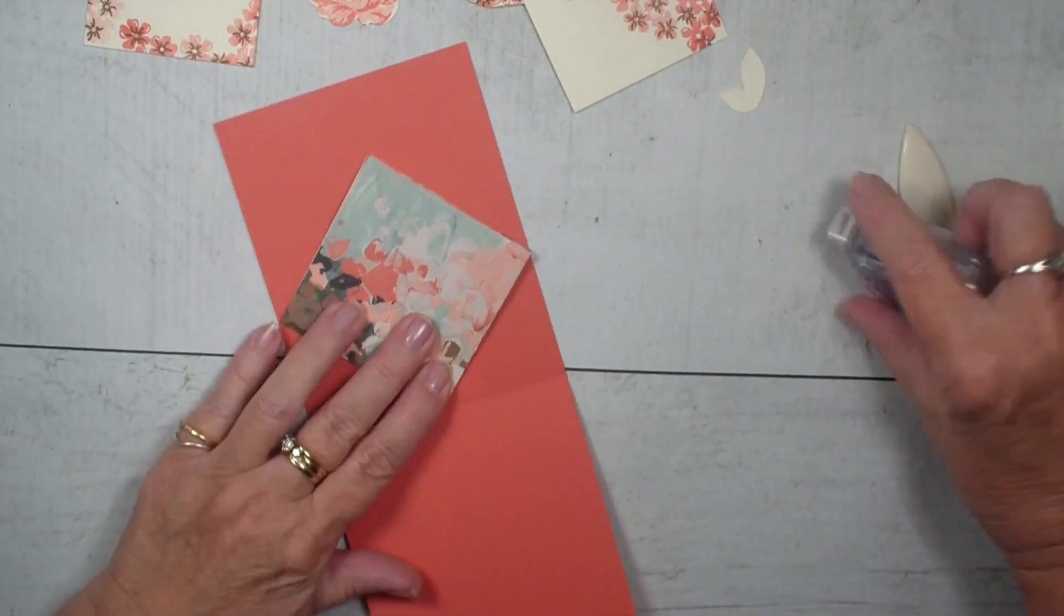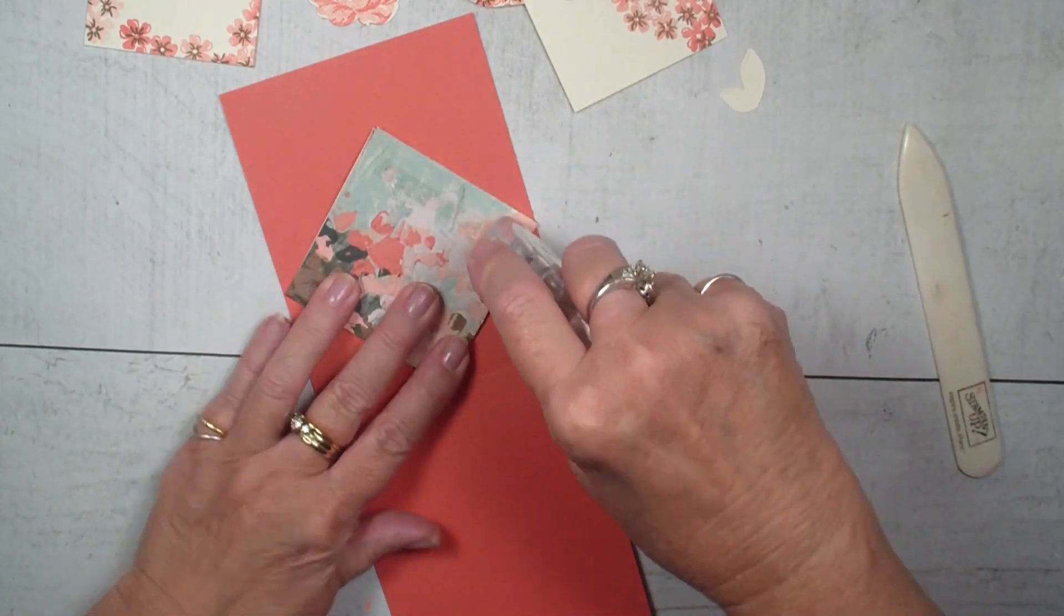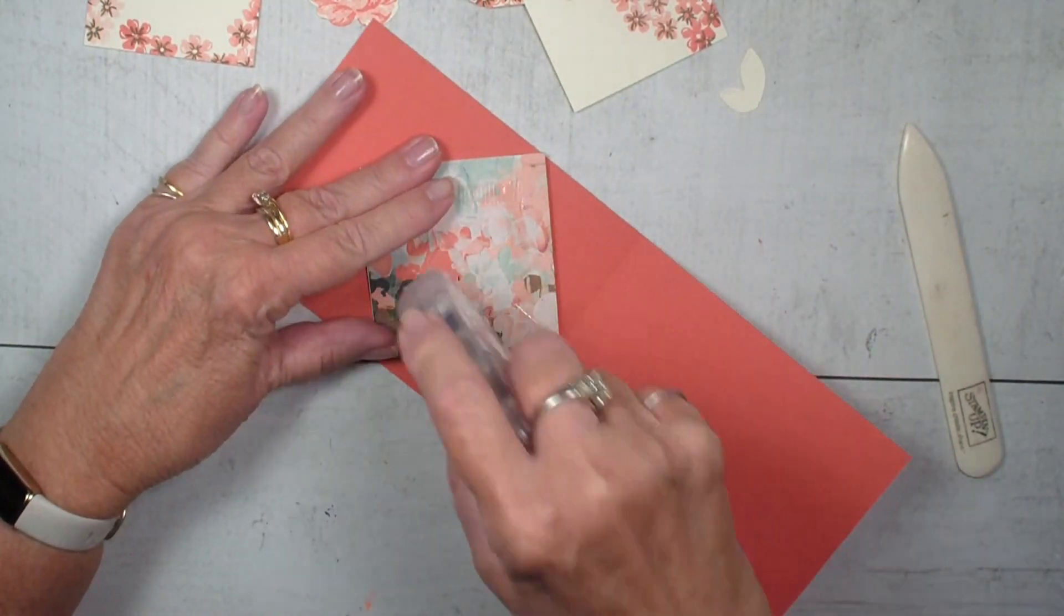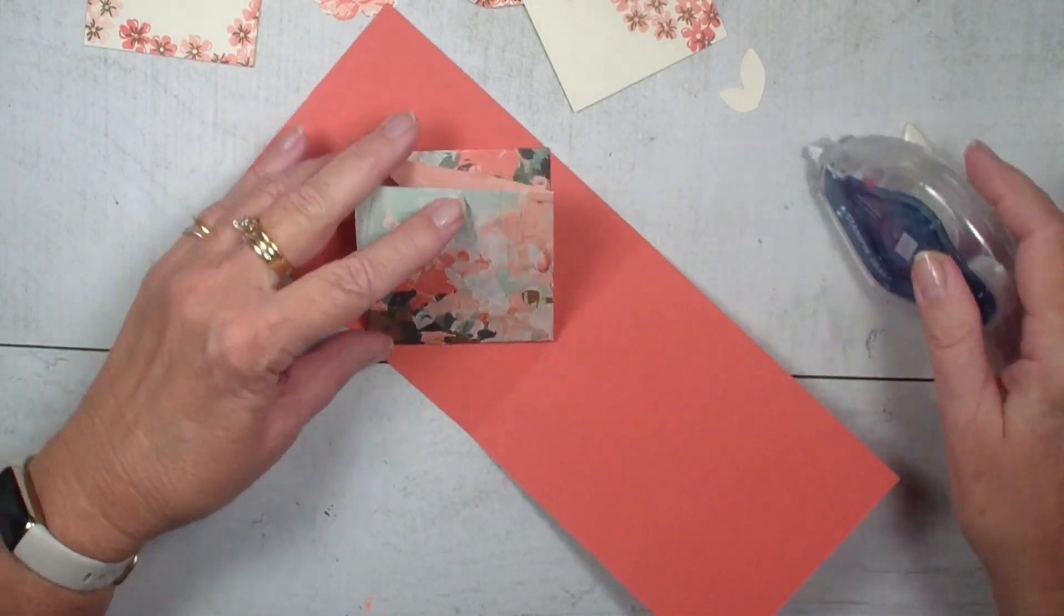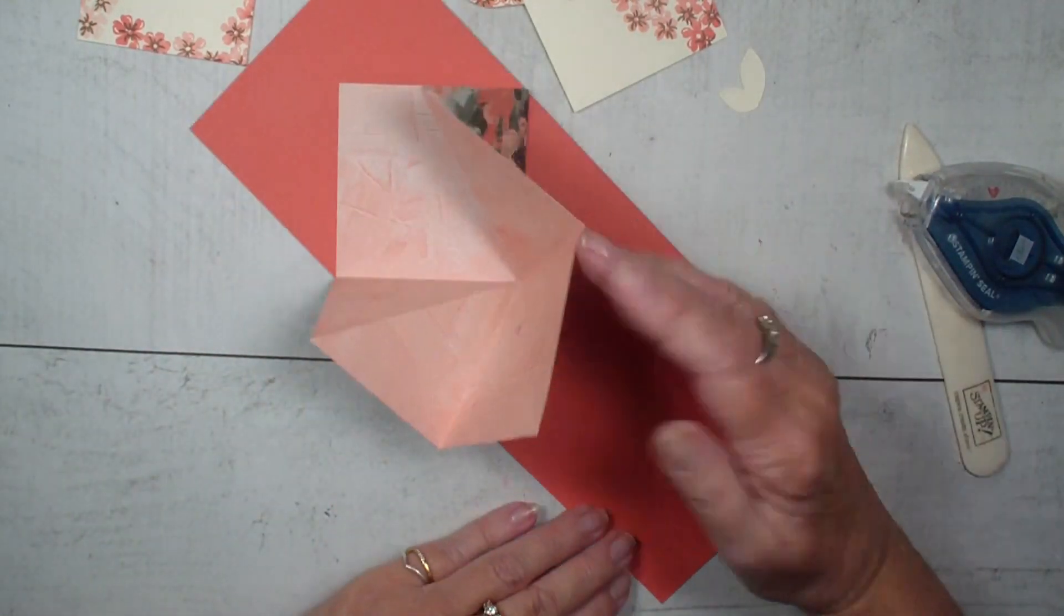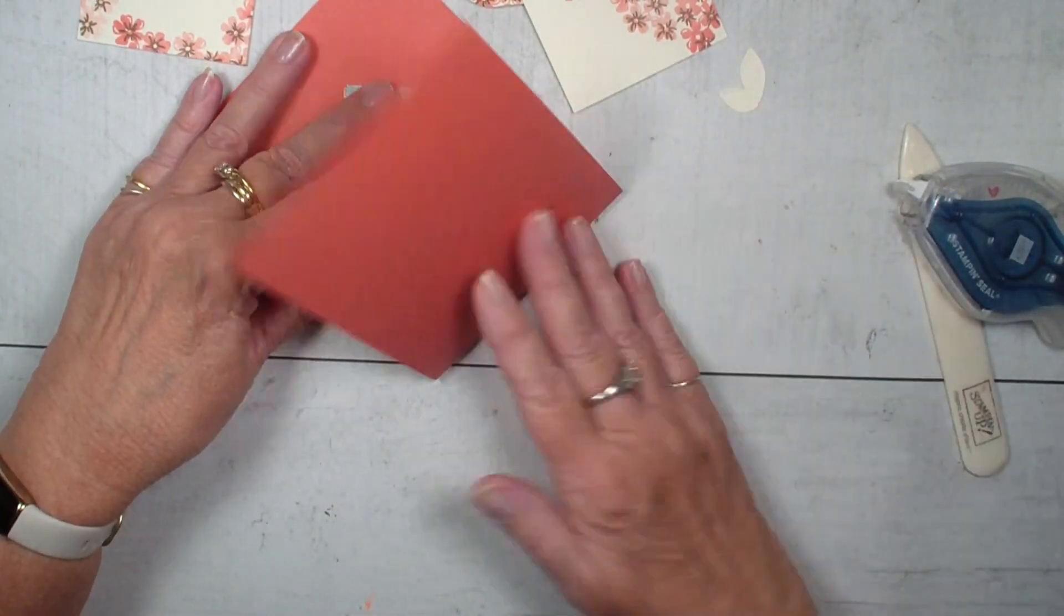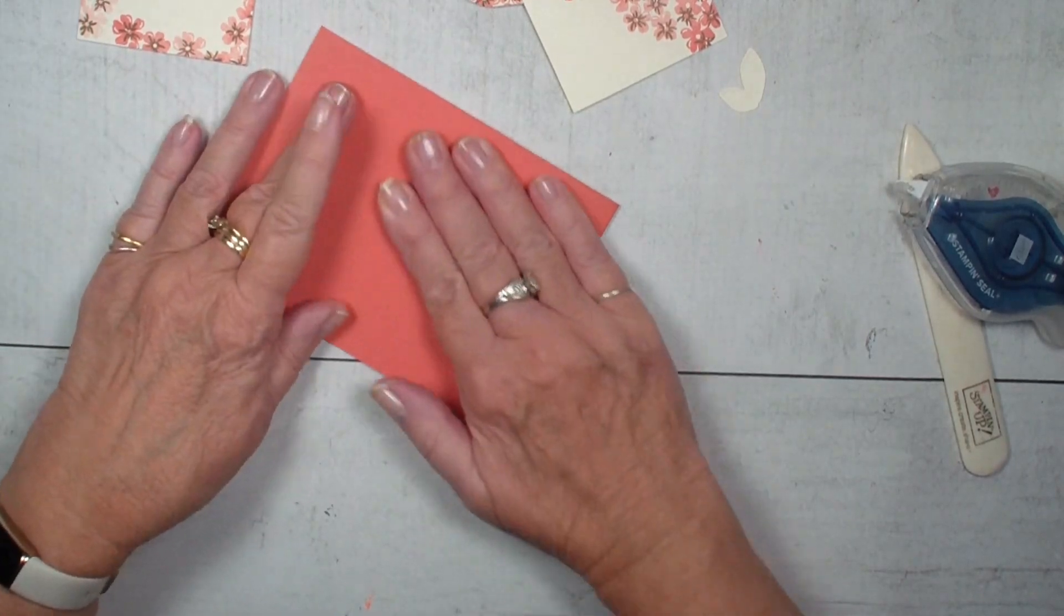and then I'm going to open it up and put the adhesive on the other side. I find that the easiest way to adhere this explosion card into the center of my card. So I'm just going to leave that closed and then close the center like so.